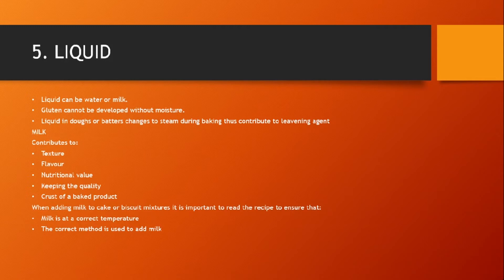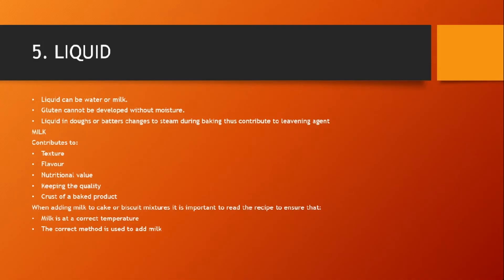The fifth ingredient is liquid, which can be water or milk. Gluten cannot be developed without moisture — gluten is a protein found in flour that is only developed once liquid is added. Liquid in doughs or batters changes to steam during baking and contributes to leavening. Milk contributes to texture, flavour, nutritional value, keeping quality, and helps in the formation of the crust. When adding milk to cake or biscuit mixtures, read the recipe carefully to confirm the correct temperature and method.